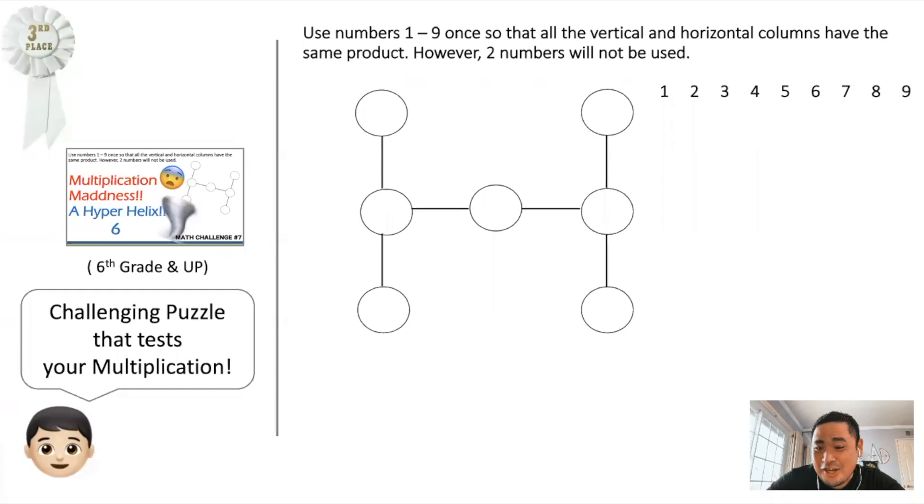And boom shakalaka! Number three is this multiplication problem of the hyperhelix using numbers from one through nine. Man, when I first tried this problem it was pretty challenging myself until I figured out the trick behind it.